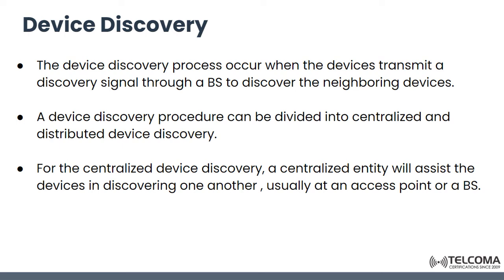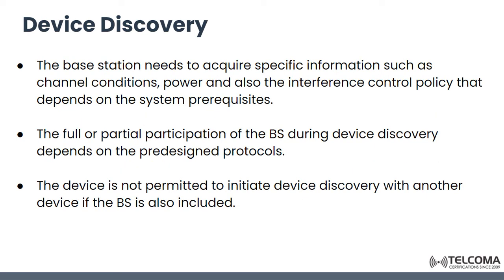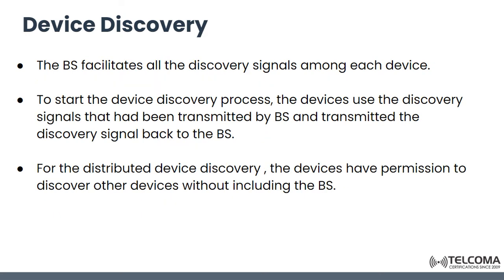Device discovery procedures can be divided into centralized and distributed device discovery. For centralized device discovery, a centralized entity such as an access point or base station assists the devices in discovering one another. The base station needs to acquire specific information like channel condition, power, and interference control policy depending on the system requirements. The full or partial participation of the base station during discovery depends upon various protocols, and the base station facilitates all the discovery signals among each device.